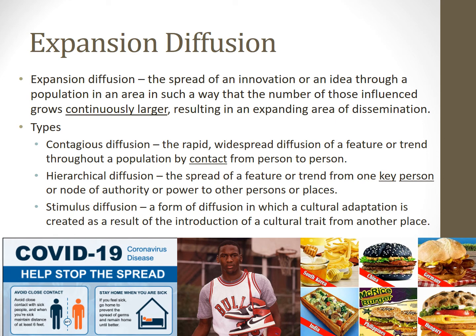Stimulus diffusion, our last form of expansion diffusion, is a form of diffusion in which a cultural adaptation is created as a result of the introduction of a cultural trait from another place. This form of diffusion is the spread of a major component with adaptations based on culture or circumstance. We talked about surfing as an example — surfing diffuses and expands to streetscapes and snowscapes and becomes skateboarding and snowboarding. The idea of domesticating animals diffuses to areas with different animals, but the underlying concept of domestication remains.